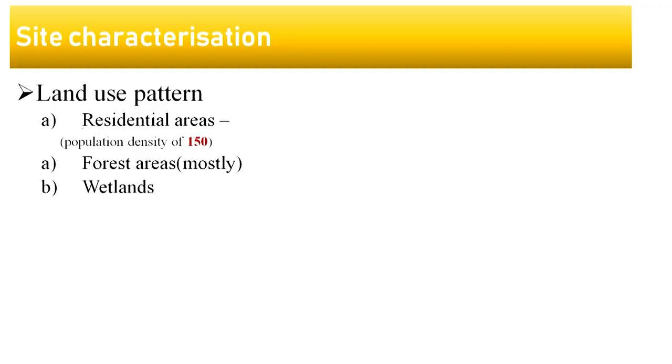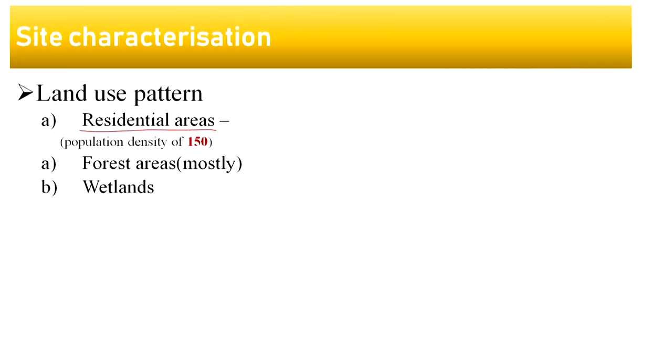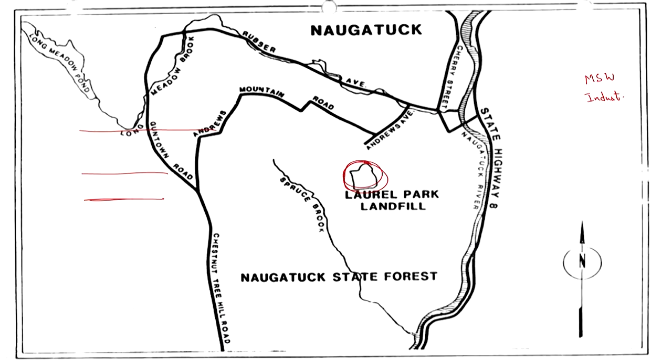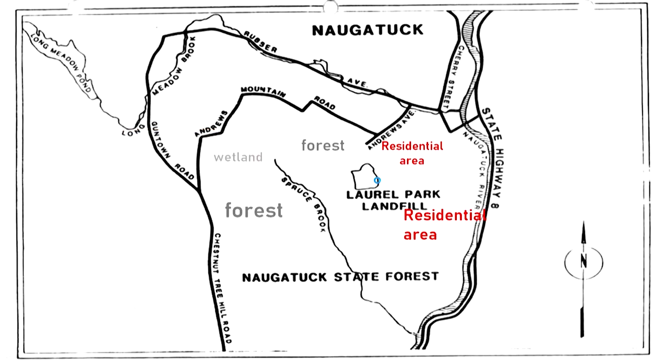Data on the Ghaziabad site was relatively limited, so we are going to move on to another case study where we have more data. This study involves a landfill in the US. Obviously, first is site characterization — we need to understand what the site is about, identify residential areas affected, forests, and ecologically sensitive wetlands. Here is the relevant site: a landfill used for both municipal solid waste and industrial waste from a plastics manufacturing company and a tire manufacturing company.